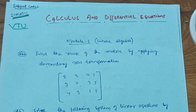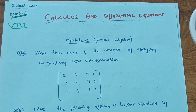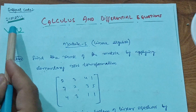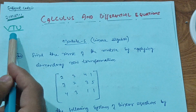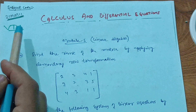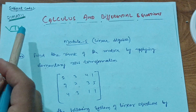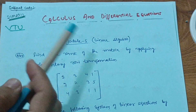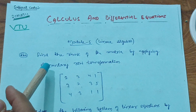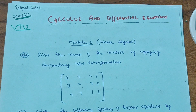Welcome back to my channel. Today I have another passing strategy for the subject Calculus and Differential Equations, which is the first semester maths for 21 scheme students. The subject code is 21MAT11, for first semester students of the 21 scheme. I'll share some passing hacks for this subject if you have a backlog, covering important questions to help you pass — at least get 35 out of 100.